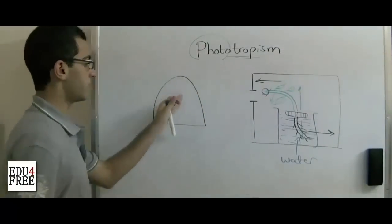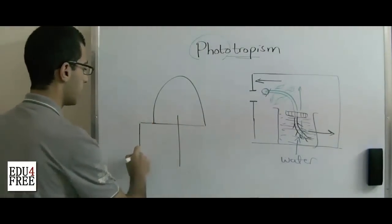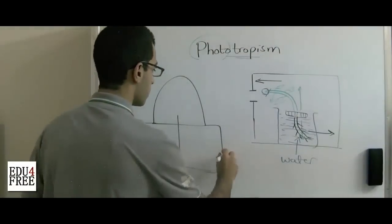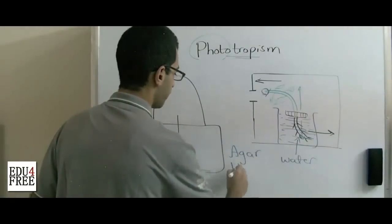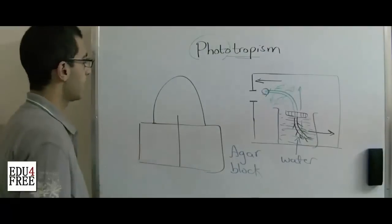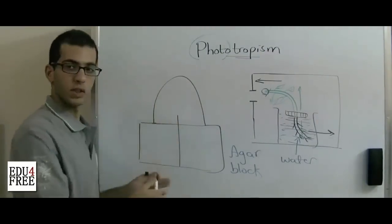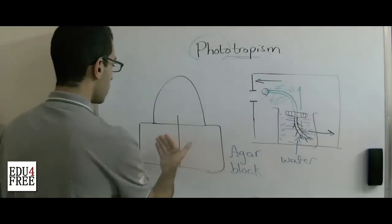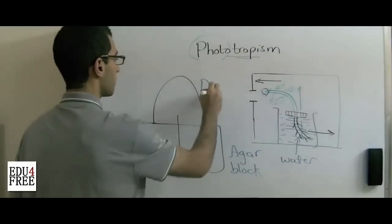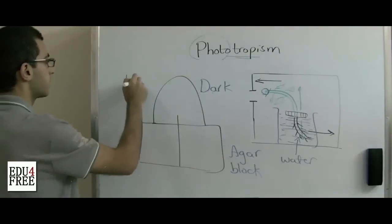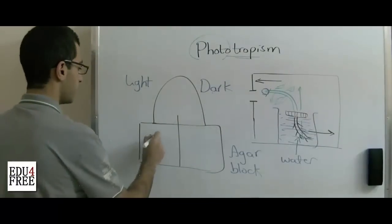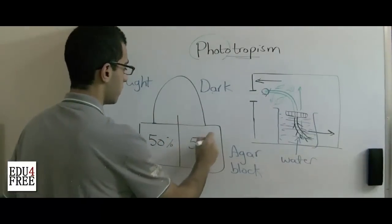He put the tip of the stem on an agar block. The agar block absorbs the auxins which are produced from the tip of the plant. So at the normal position, auxins are produced on equal terms on both right and left sides, or on both dark and light sides. So it's 50% and 50%.